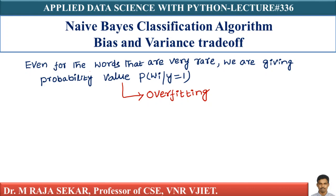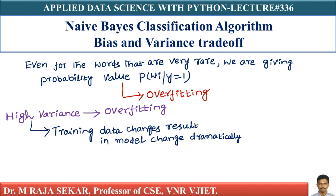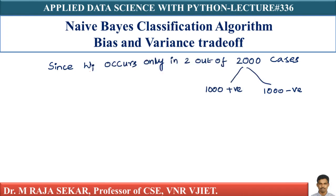This means we are overfitting. Let's remember what overfitting is — overfitting basically means high variance. What does high variance mean? If the training data changes and results in the model changing dramatically, that is high variance. If a small change in training data results in large model changes, that is called high variance. This is the definition of high variance. We discussed this when we studied K-nearest neighbor bias-variance trade-off.